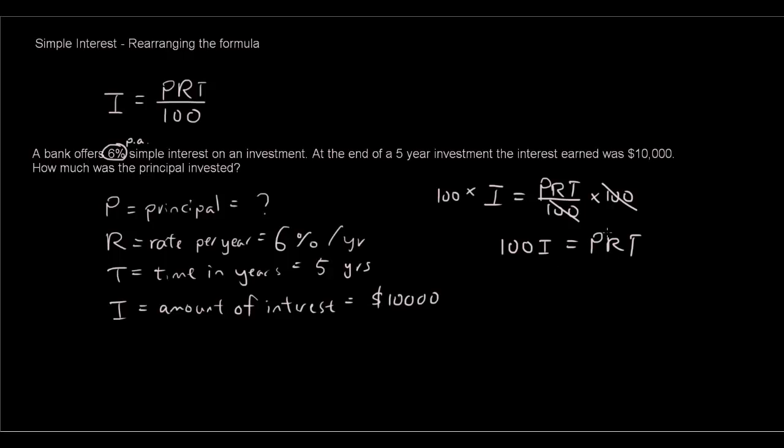Notice we want to get P as the subject of the equation, so we're going to divide by RT on both sides. So RT divided by RT cancels down to 1, so we're left with P equals 100I over RT.